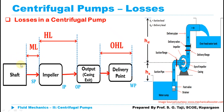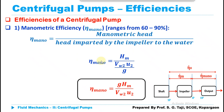To sum up all those losses: between the shaft and impeller there will be mechanical losses; when water is moving through the impeller there will be hydraulic losses; and from the source of water to the eye of the impeller, and from the eye of the impeller to the delivery point, there are other hydraulic losses. Now, if we talk about the different efficiencies generally used in the centrifugal pump, those are: first, manometric efficiency; second, mechanical efficiency; third, volumetric efficiency; and fourth, overall efficiency.